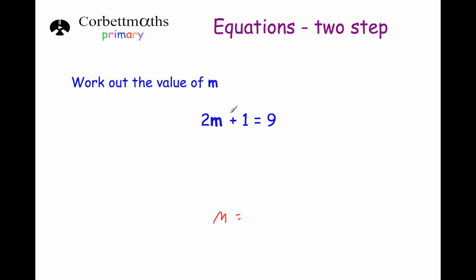To get rid of the plus 1, we do the opposite which is minus 1 to both sides of the equation. On the left hand side we had 2m plus 1; now we minus 1 to get rid of the plus 1, so we're left with 2m. On the right hand side we had 9 but we take away 1, so it's equal to 8.